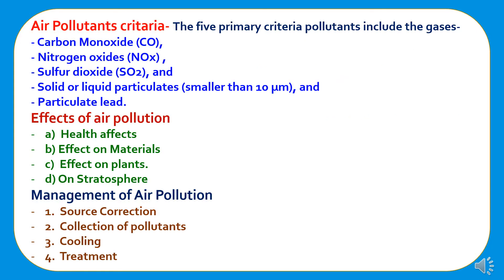The five primary criteria pollutants include the gases carbon monoxide, nitrogen oxides, sulfur dioxide, solid or liquid particulates, and particulate lead. The effects of air pollution include health effects, effects on materials, effects on plants, and effects on the stratosphere. Management practices for air pollution control include source correction, collection of pollutants, cooling of the atmosphere, and treatment.